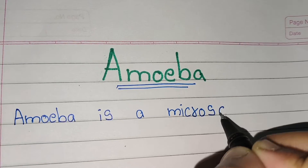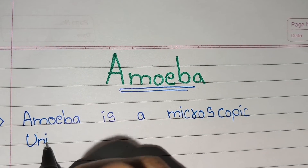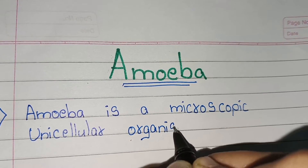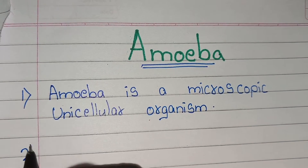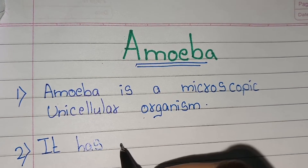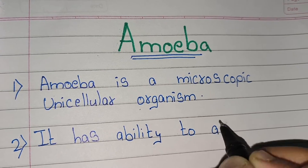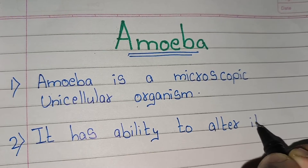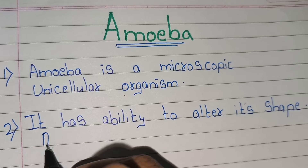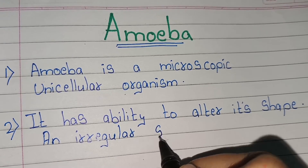Amoeba is a microscopic unicellular organism. It has the ability to alter its shape — an irregular shaped protozoan.